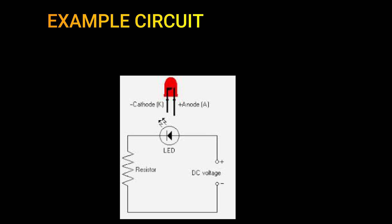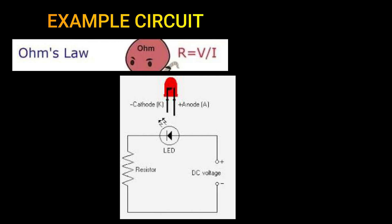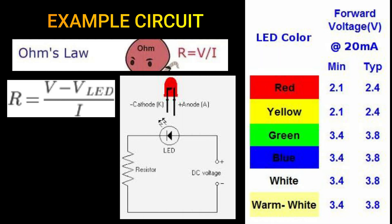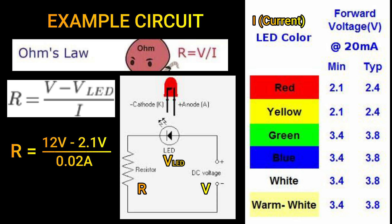Ito yung example circuit natin. Meron tayong DC voltage, yun yung voltage source, LED at resistor. Ngayon, apply natin yung Ohm's Law. Resistance is equivalent to voltage source minus yung forward voltage ng LED all over yung current na 20 milliamps. R is equivalent to source voltage 12 volts minus 2.1 volts, red LED yung minimum niya, all over 0.02 ampere. Computed resistance value: 495 ohms.